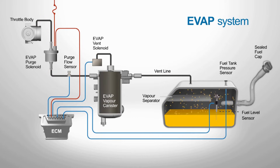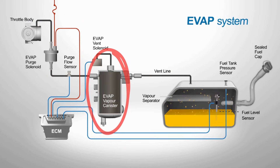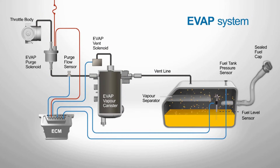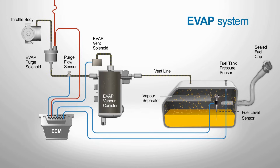When the engine is off, fuel vapors are stored in the charcoal canister instead of being released into the atmosphere. Once the engine is running and the conditions are right, the purge valve opens. This allows those stored vapors to flow into the engine, where they're burned during the normal combustion process.